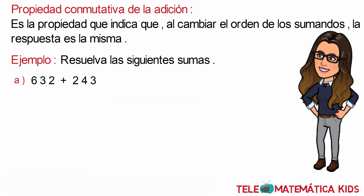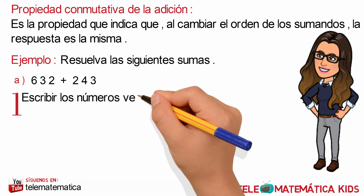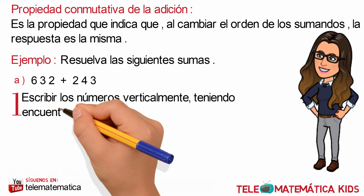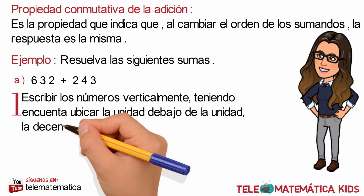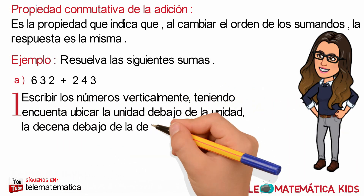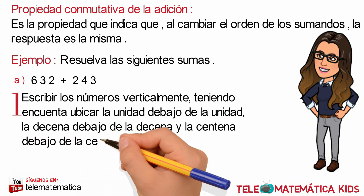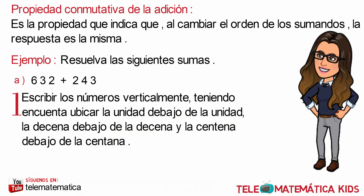Recordemos que para sumar números naturales con tres cifras y dos sumandos, debemos seguir el siguiente procedimiento. En primer lugar, escribiremos los números verticalmente, teniendo en cuenta ubicar la unidad debajo de la unidad, la decena debajo de la decena y la centena debajo de la centena.